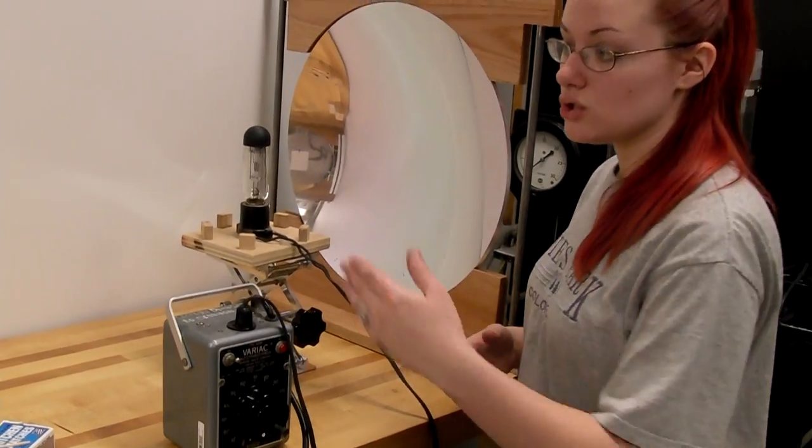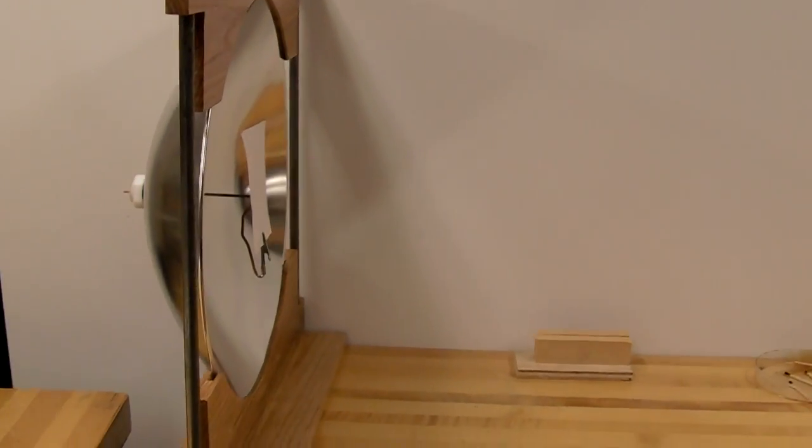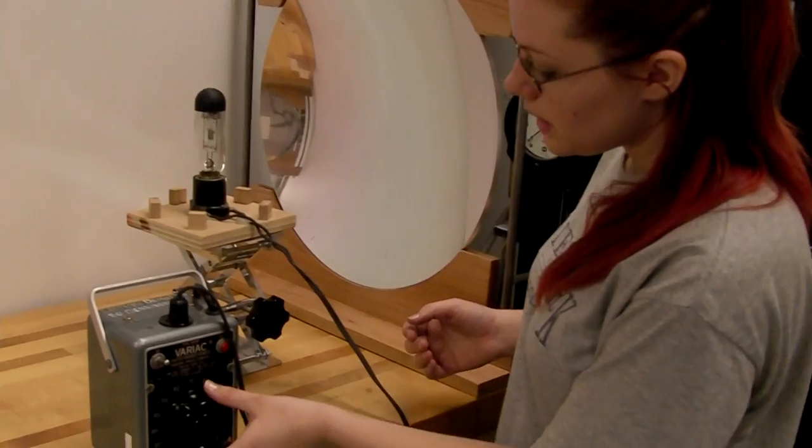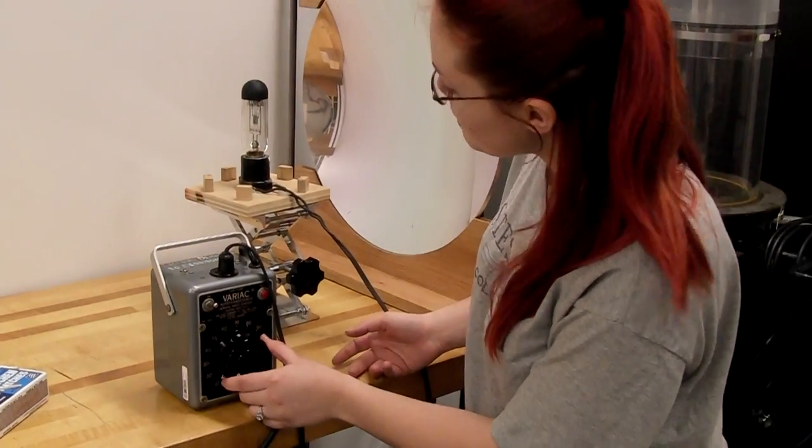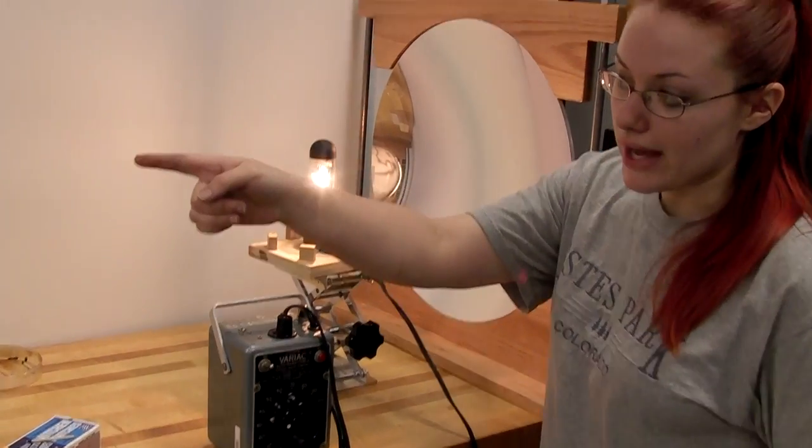The next step is to focus the point on the opposite mirror in order to get all of the power focused at the right focal length. So what I do to start is turn up the power just enough so that I can see the reflection of the light on the other mirror.